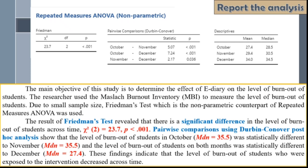Pairwise comparisons using Durbin-Conover post hoc analysis show that the level of burnout of students in October was statistically different to November, and the level of burnout of students on both months was statistically different to December, represented by the given values of median. These findings indicate that the level of burnout of students who were exposed to the intervention decreased across time.